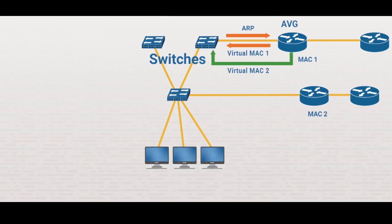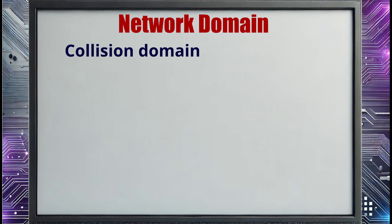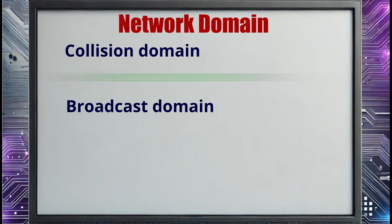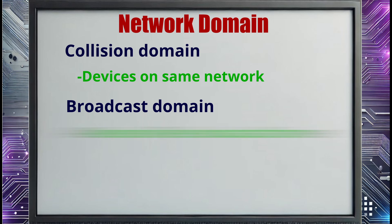Another benefit of network segmentation is that it reduces the number of devices that receive broadcast traffic. Limiting the number of broadcast packets a device needs to process means there's more time for it to process the data that was actually intended for it. When you work with Ethernet, the terms collision domain and broadcast domain are used to describe which areas of the network are affected by these collisions and broadcasts. A collision domain identifies the devices that share the same network segment — these are the devices that might send data that could collide with another computer sending data at the same time. A broadcast domain identifies the devices that will see a broadcast frame that's sent on the network.